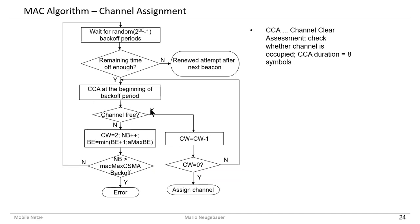If the channel is free, we evaluate it as yes and count down the contention window. We check again at the next backoff period, and if the channel is free we count down again, and a third time. If the contention window countdown reaches zero, we can use the channel and send our message from the reduced function device to the coordinator.